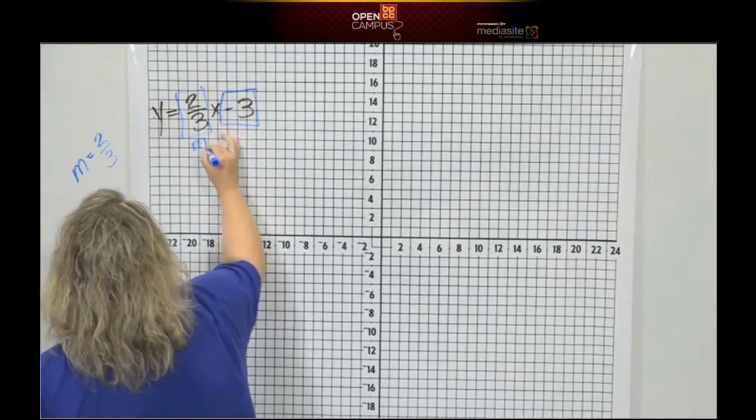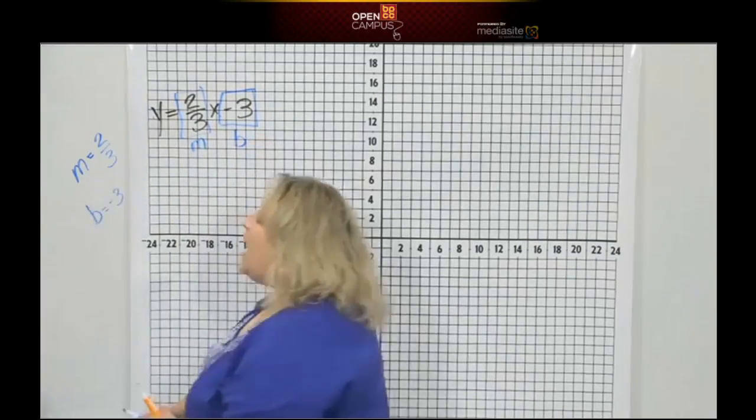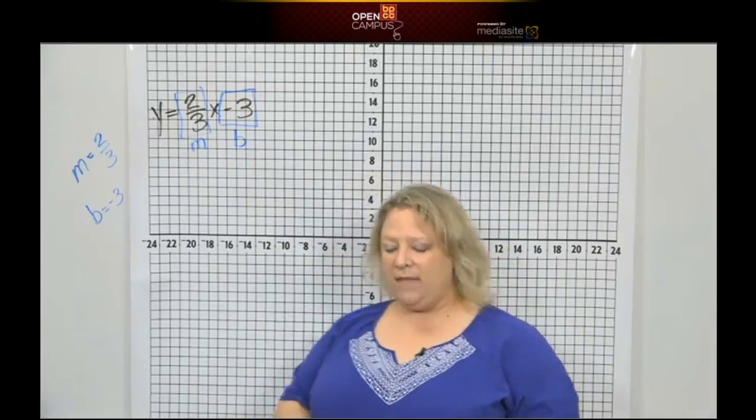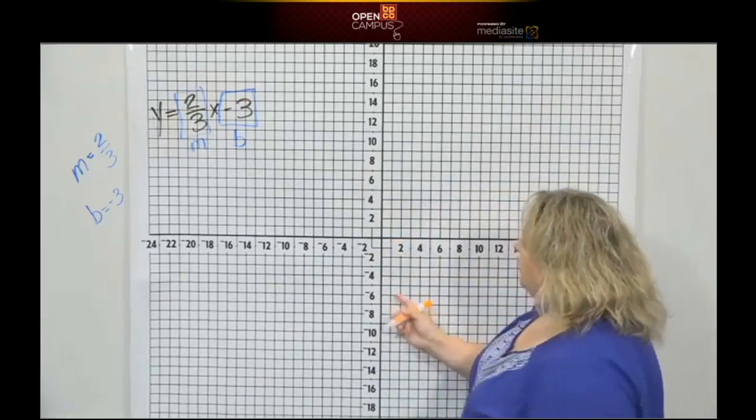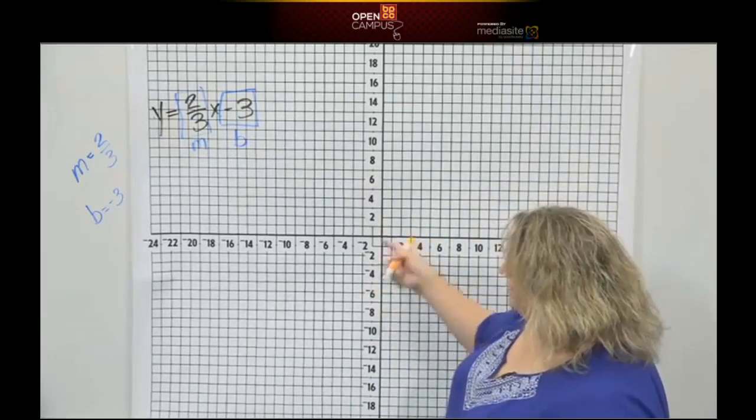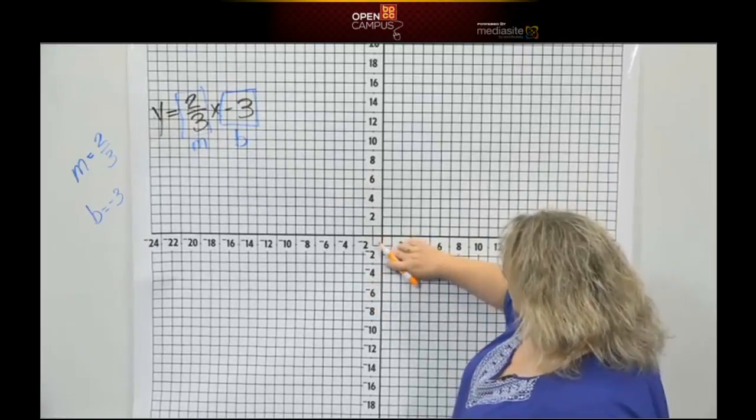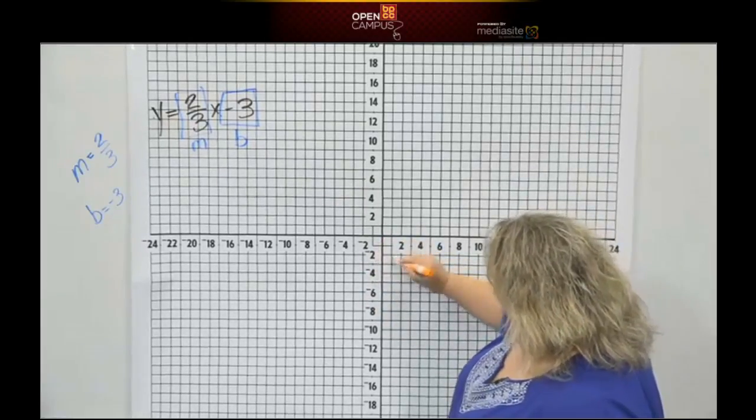So this is m, this is b. And remember that b stands for what? Begin. That's right. So we're going to begin at y equals negative three, which is down here. Your y-axis, if it's negative, it's down here. So it's down one, down two, down three.